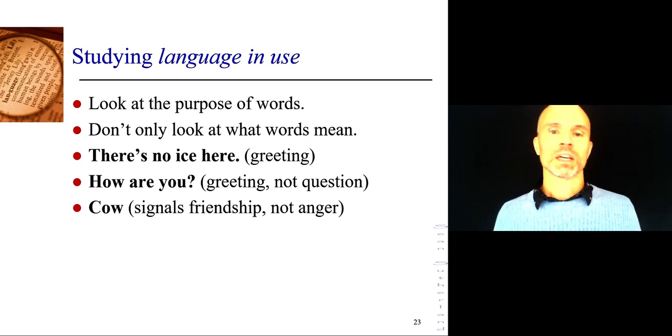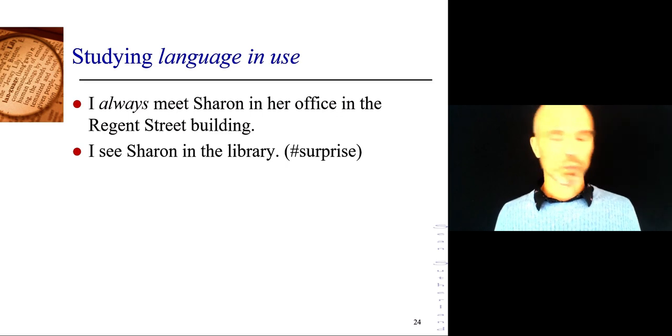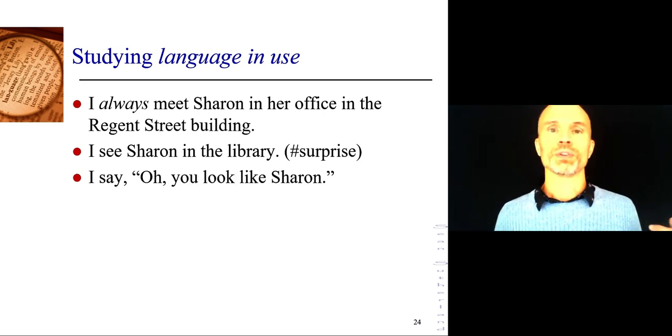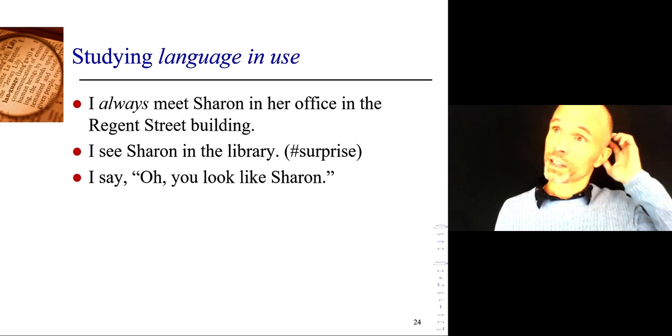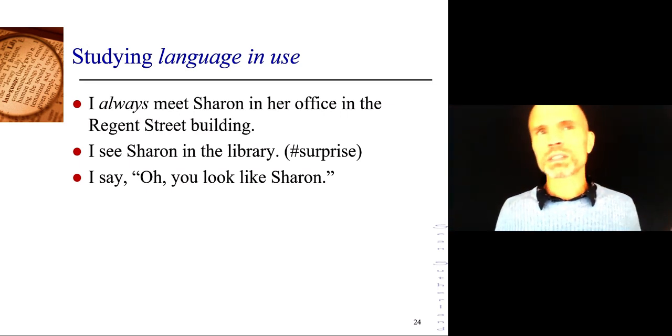So that's studying language in use. Things don't always mean what they appear to mean at first glance, at the surface level. I always meet Sharon in her office in the Regent Street building. Suddenly, one time, I see Sharon in the library over on Little Titchfield Street of the university. And I say to her, oh, you look like Sharon. So what have I done here? That I'm saying you look like Sharon is really just a sort of greeting with that extra bit of, why are you here? Drawing on the fact that contextually she's in a new place. But usually I meet her in that other place. Therefore, if she's always in the other place, she can't be Sharon, but she sure looks like Sharon.